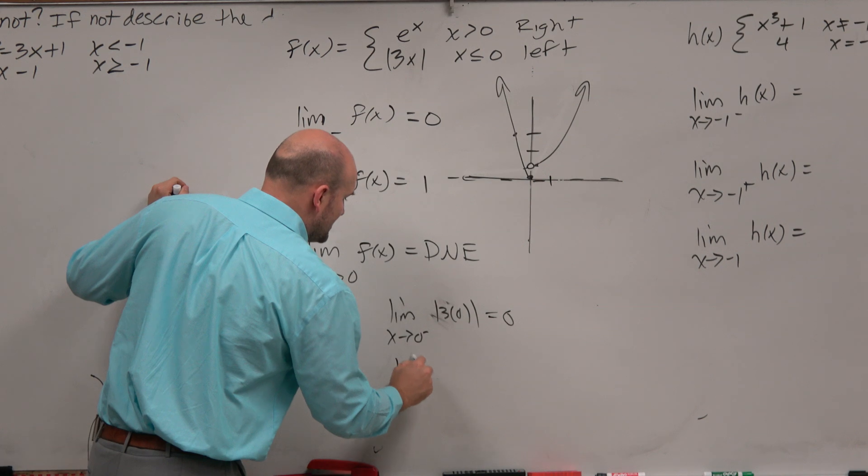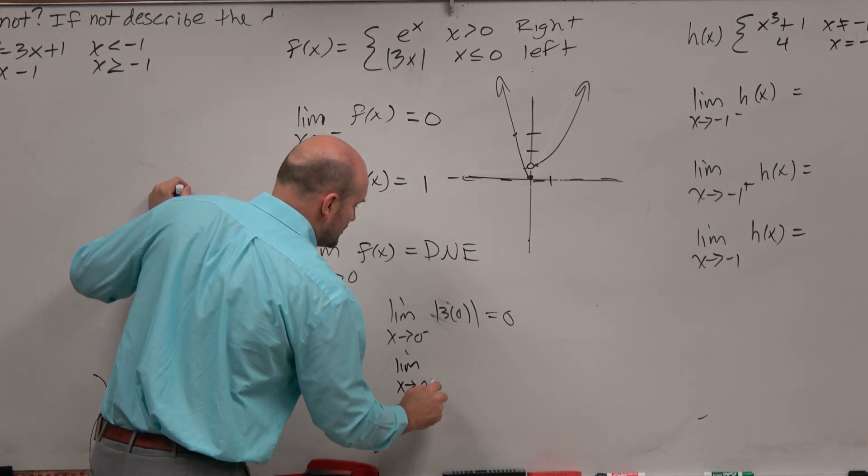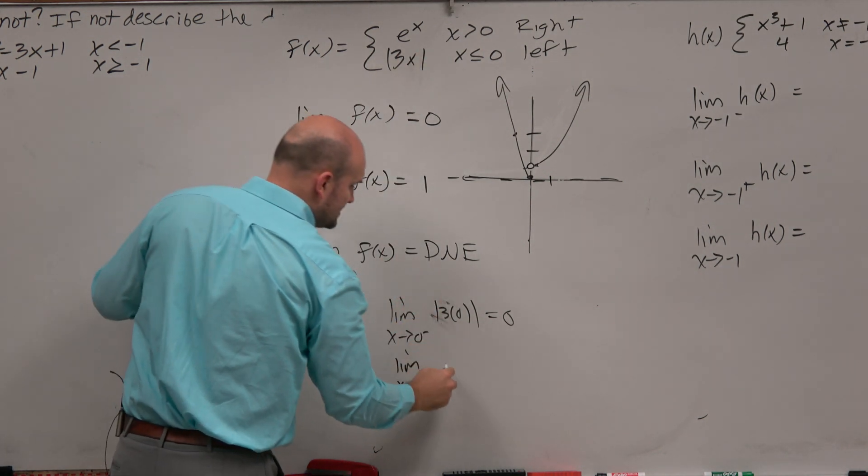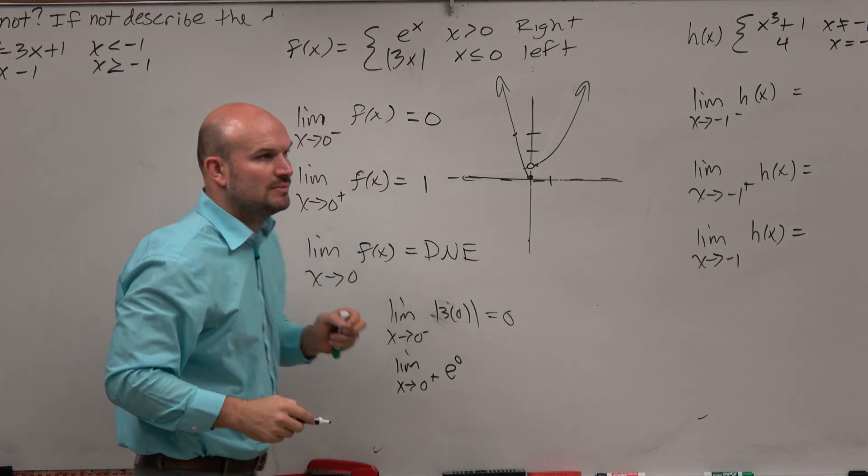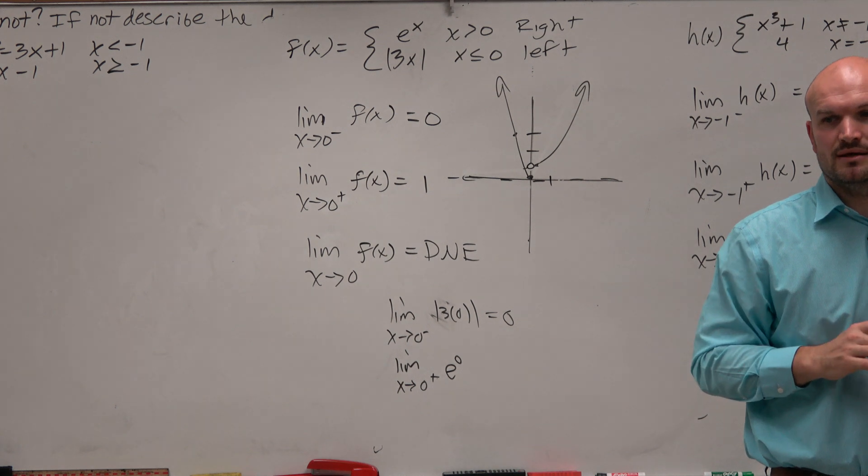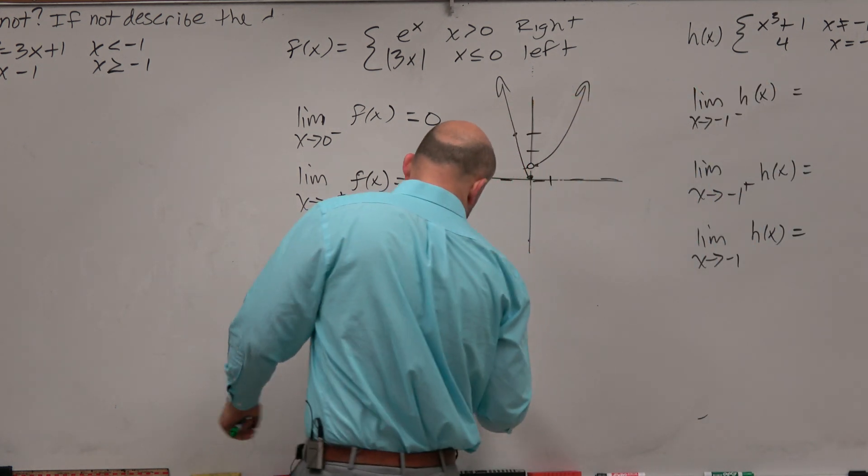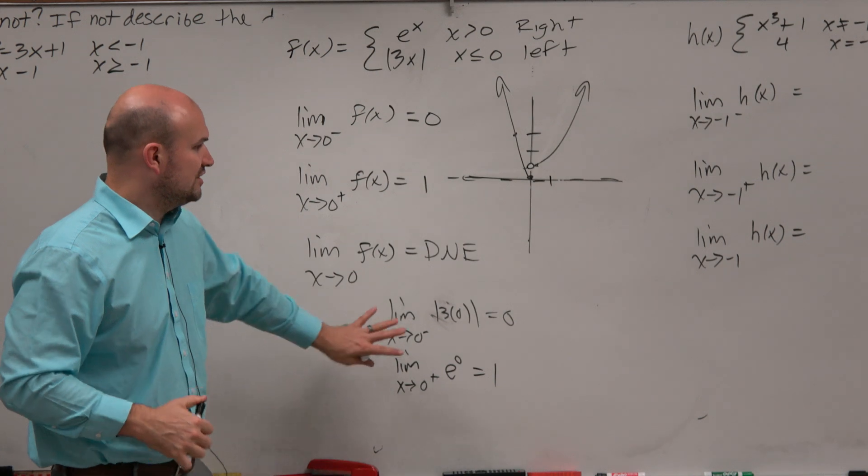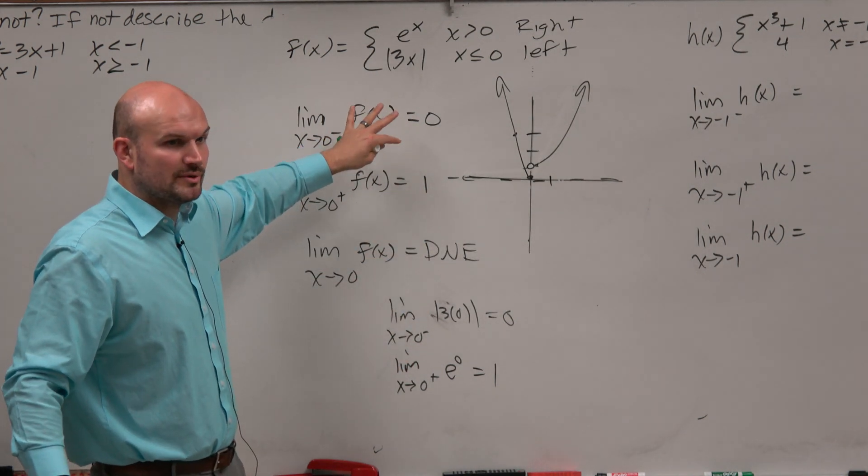And then if I wanted to evaluate the limit as x approaches 0 from the right, I would plug it in as e to the 0. And hopefully, if you guys remember from logarithms, or really anything actually, anything raised to the 0 power has to be 1. So therefore, algebraically, we can confirm our results that we found from the graph.